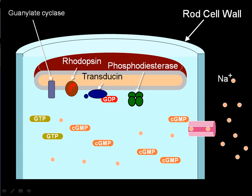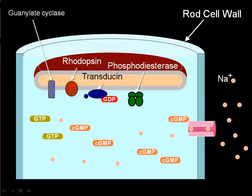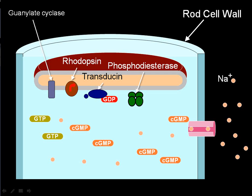Here's the rod cell wall right here on this rod. And inside this rod, you've got these discs — I've cut the disc in half. So here's the cartoon starting out. We're going to see what happens when a photon of light hits. A rod, by the way, is able to sense a single photon of light coming in — that's as sensitive as you can get to light. In the dark, the rod normally has plenty of these cGMP, or cyclic GMP, molecules. They're steadily being created and no photon of light has hit or anything like that.